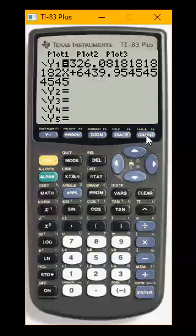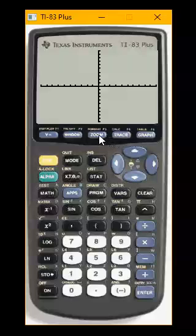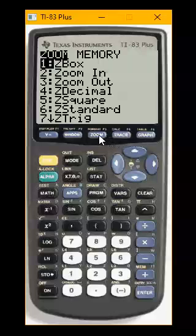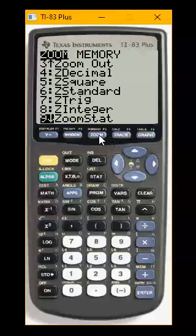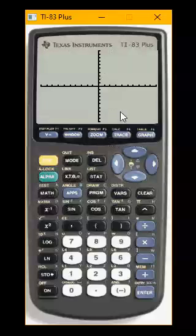So I go to Y equals. Here's my linear equation. And if I go to graph my data, I should now see if I zoom and then do zoom stat, number nine, I should see my scatter plot and line of best fit.